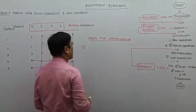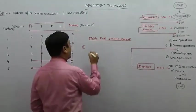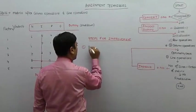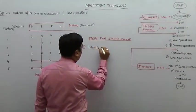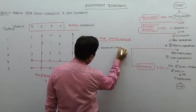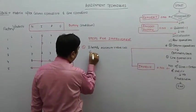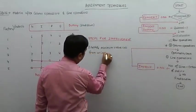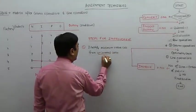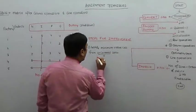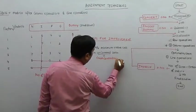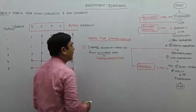First step is: identify minimum value cell from uncovered cells. Uncovered cells कौन से होते हैं? Uncovered का मतलब है — cells not covered by lines.